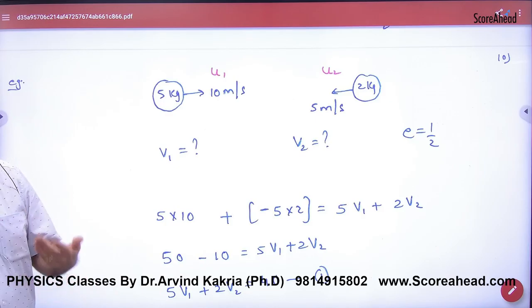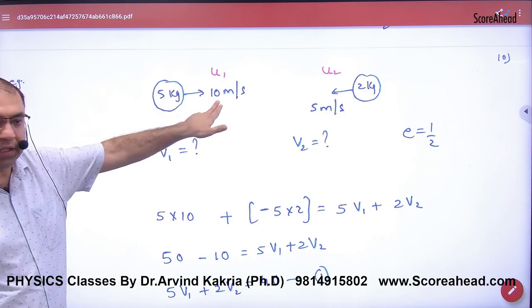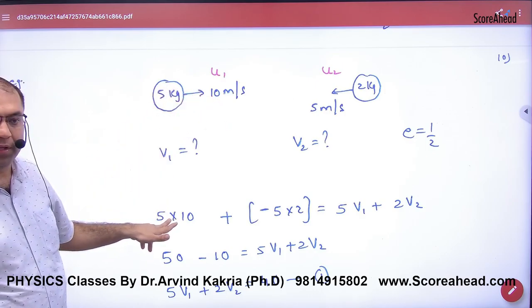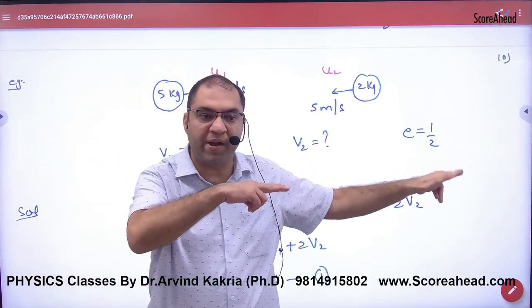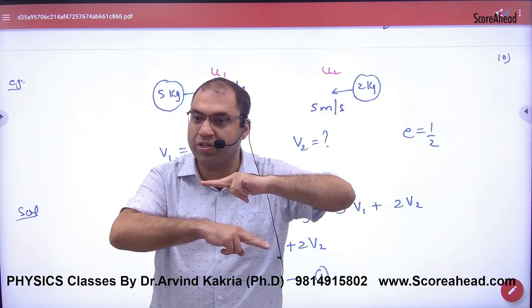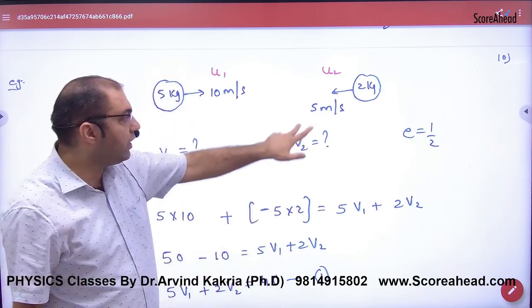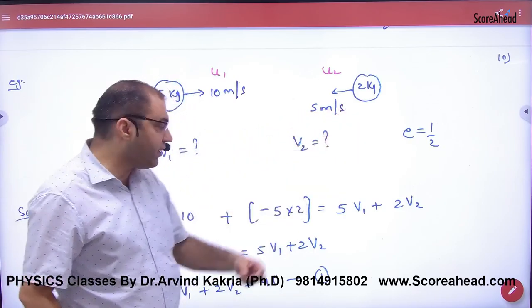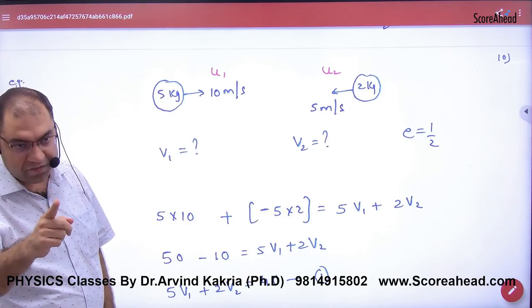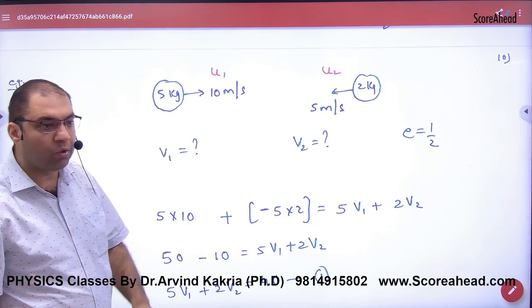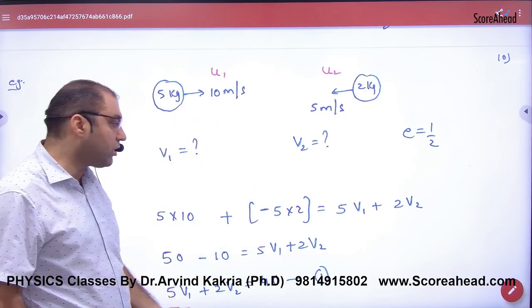So the first equation is momentum conservation. Before collision, momentum is M1 into U1, which is 5 into 10. This ball has changed its direction. Remember, velocities and momentum in this direction are always positive. Whichever has changed direction to this side, its momentum or velocity is negative. So here the momentum will be 2 into 5. It will not be added, it will be subtracted. Is this step clear? Understanding the difference here? If both velocities are in one direction, momentum will add. If one has changed its direction, its momentum will be negative.